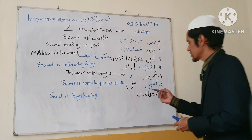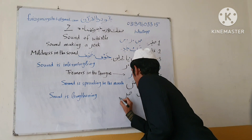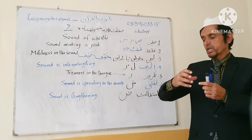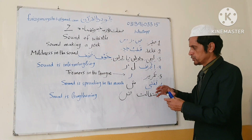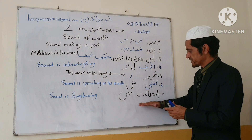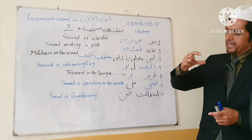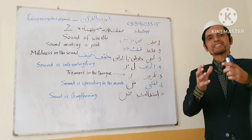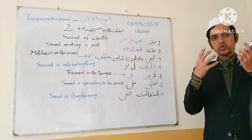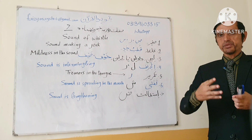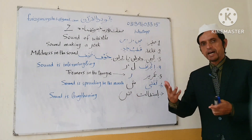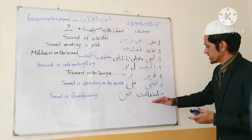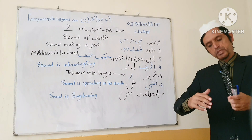Number seven is Istitaalat. Istitaalat is found only in Daad. The sound is lengthening. Daad has the lengthiest articulation point, so whenever we articulate Daad, the sound is lengthened — it takes more time to produce this letter. Compare: Lam, Nun, Ra, Swad, Za — Daad takes more time: 'Vaad, Vaad.' This is called Istitaalat — meaning to lengthen something.